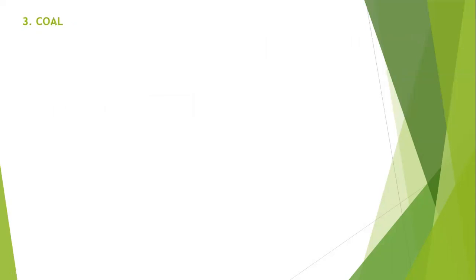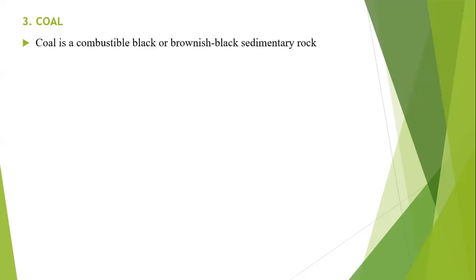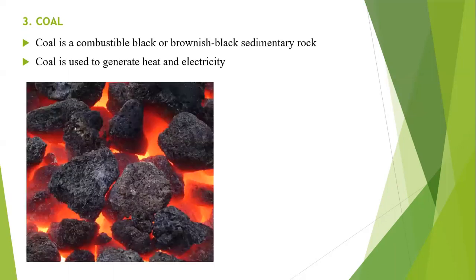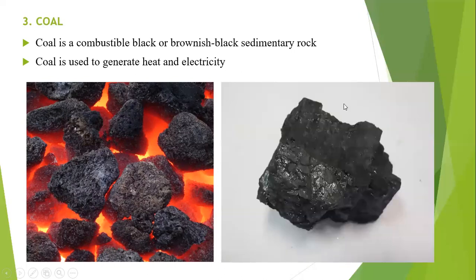Coal is mostly found in the southern part of Zambia, specifically in Maamba, where we have the largest production of coal in Zambia. Coal is a combustible black or brownish-black sedimentary rock. It is used to generate heat and electricity — when you burn coal it produces massive heat used for many things.